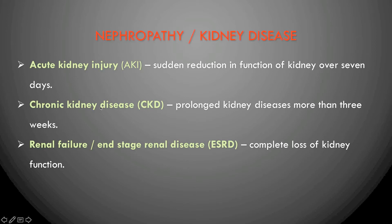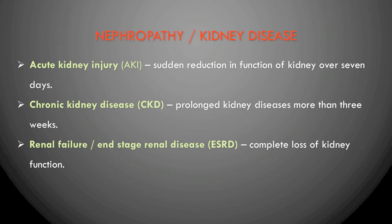The second condition is chronic kidney disease, when kidney injury or disease becomes prolonged for more than three months. The third is renal failure, now termed end-stage renal disease (ESRD), where there is complete loss of kidney function and the person requires hemodialysis or other artificial interventions.